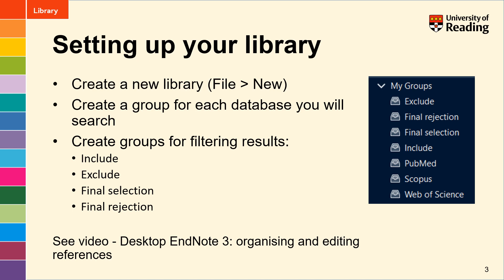When you're doing a systematic review you need a completely empty EndNote library, so first of all go to create a new library by going to File and New. Once you've done that, create some groups — one for each database you will be searching — and then groups that will help you with filtering your results: an include group, an exclude group, a final selection, and a final rejection group. If you need more support with creating groups, take a look at our other video Desktop EndNote 3: Organizing and Editing References.